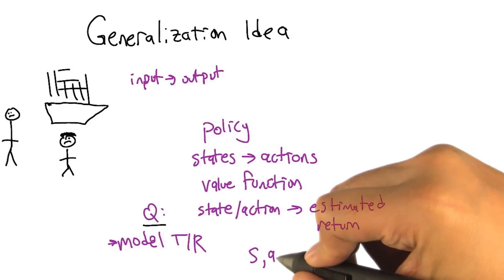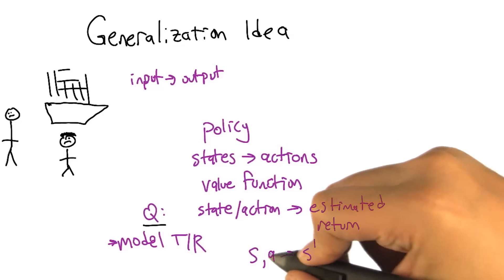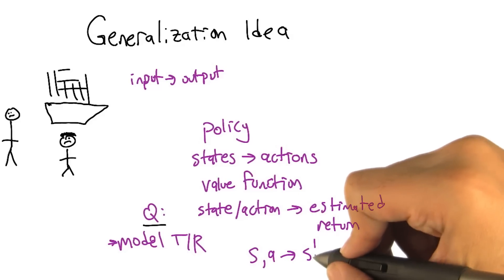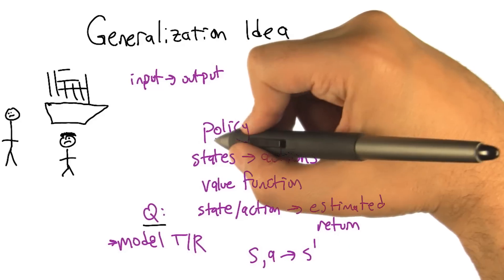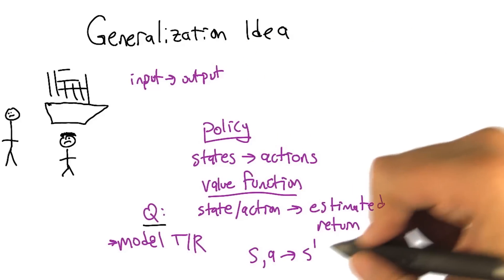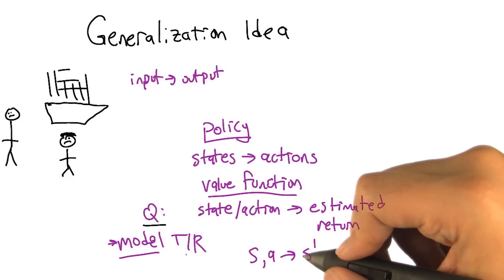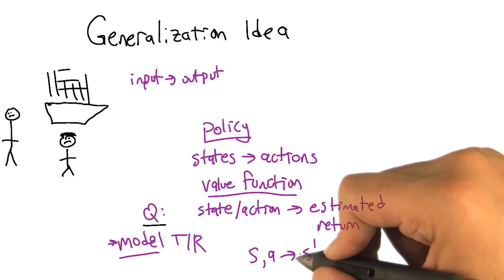You're in some state, take some action, and you observe what next state you're in. These are actually supervised examples of transitions. So unlike learning the policy or learning the value function, when you're trying to learn the model, you're actually getting standard supervised examples.